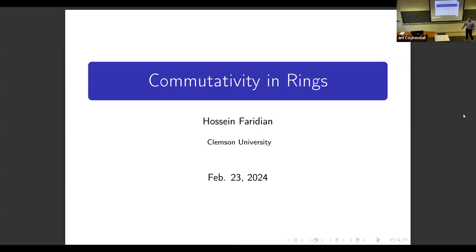There is a very interesting problem. If I give you an abstract ring R, what are those identities that, if the elements of the ring satisfy them, force the ring to be commutative? One trivial identity is ab−ba=0. For example, if I have a ring in which every element is idempotent — meaning if I raise any element to the power 2 I get A back, A²=A — this ring is known to be commutative. This is an identity that forces the ring to be commutative.